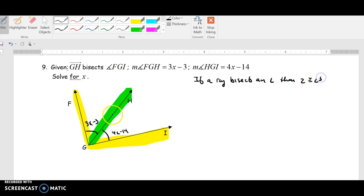So right away, if GH cuts its angle or bisects it, it cuts it in half, which means each angle is congruent. So what we get out of this is angle FGH ends up being congruent to angle HGI. So 3X minus 3 is equal to 4X.